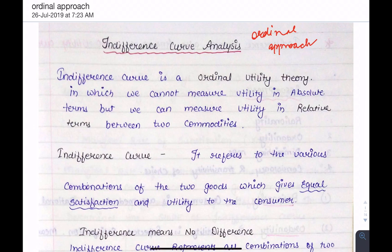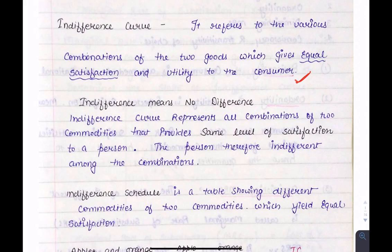The Indifference Curve shows us two goods combinations that are giving equal satisfaction to consumers. It refers to the various combinations of two goods which give equal satisfaction and utility to the consumer. Indifference means no difference, so all the combinations will give the same level of satisfaction to the person.